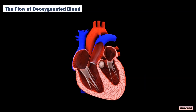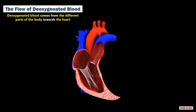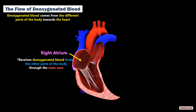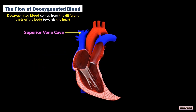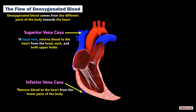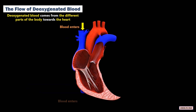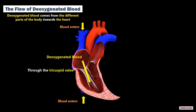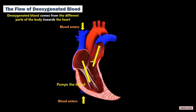The deoxygenated blood comes from the different parts of the body towards the heart. The right atrium receives the deoxygenated blood from other parts of the body via the vena cava. The superior vena cava, a large vein, returns blood to the heart from the head, neck, and both upper limbs, while the inferior vena cava returns blood to the heart from the lower parts of the body. The deoxygenated blood then moves from the right atrium through the tricuspid valve to the right ventricle, which pumps the blood to the main pulmonary artery, which connects to the lungs.